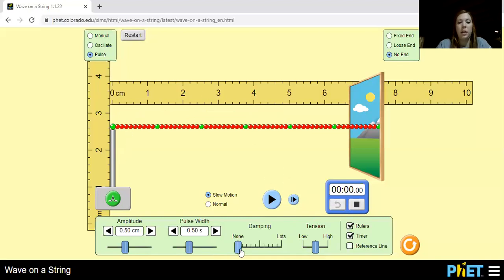And last but not least, let's do tension on high. Send the pulse through. And we get 0.72 for the time.